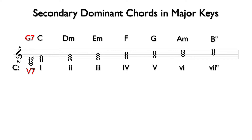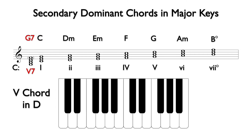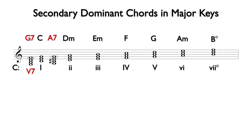To find the secondary dominant of D minor, we find the five chord in the key of D, which is always a perfect fifth above. Therefore, the five chord in D minor is A or A7. We analyze this chord as V or V7 of 2. Notice that the A chord has a chromatic note, the C sharp. Since secondary dominants are chromatic chords, we expect one or more accidentals. The C sharp is a half step below D and serves as the leading tone to the D note, helping the D minor chord temporarily feel like one. We expect the V7 of 2 to lead to 2.